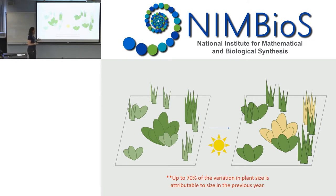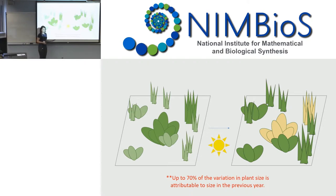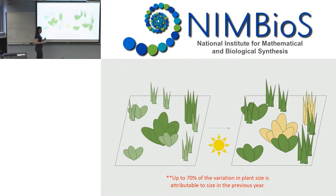To take a big step back, this may not matter very much at all, even on the scale we're talking about, because up to 70% of the variation in individual plant size is attributable to size of that individual in the previous year. When I take that back to the geographic scale — talking about competition or climate effects — some of the things I'm interested in are our objectives for our models, the time horizon we're predicting for, and which parameters are relevant.